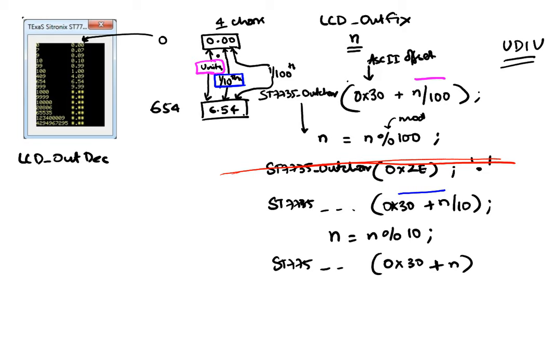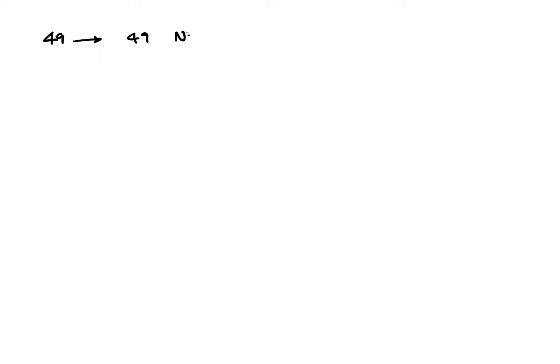If I have a number like 49, I want it displayed as 49, not as 049. The extraneous leading zeros are not acceptable. So the approach of just removing the decimal point line doesn't fully solve the problem — we need a smarter way to handle the decimal output without leading zeros.